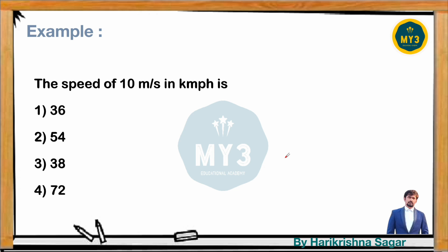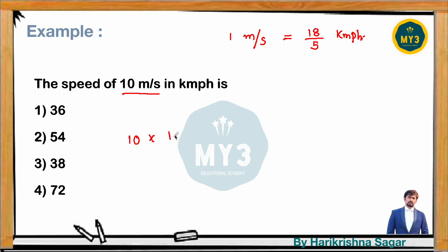For example, if we have a speed of 10 meters per second and need to express it in kilometers per hour: 1 m/s = 18/5 km/hr, so 10 × 18/5 = 10 × 18 ÷ 5 = 36 km/hr. So 10 meters per second equals 36 kilometers per hour, which is available as option 1.